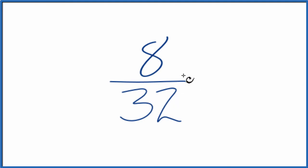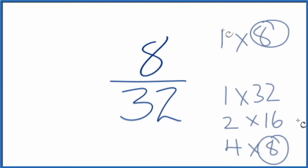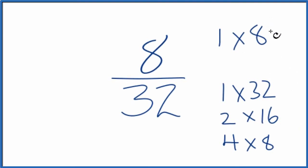These are the factors of 8 and 32. As we look at these, the greatest common factor here, we have 8 here and 8 here.